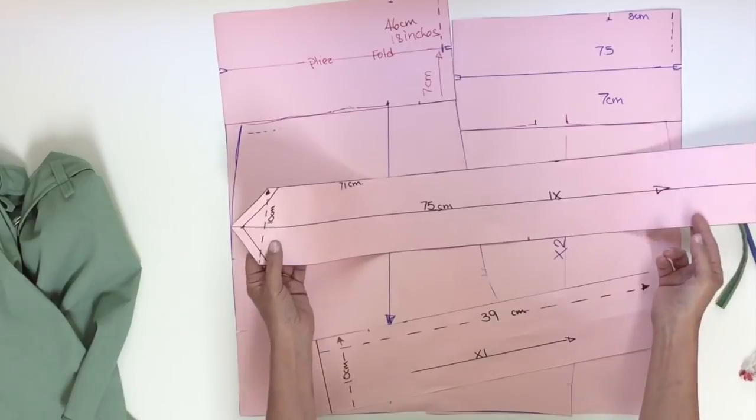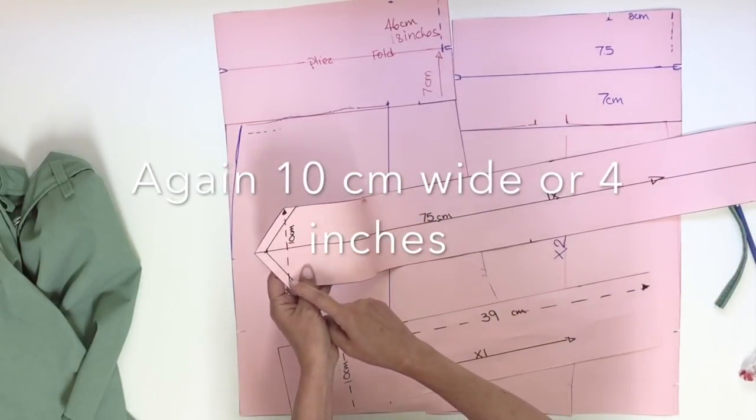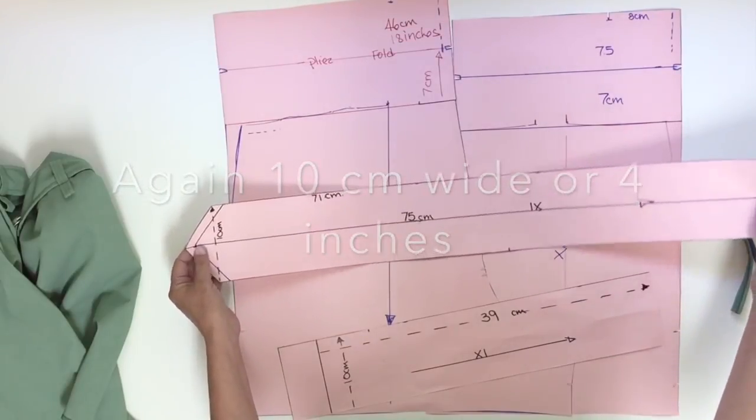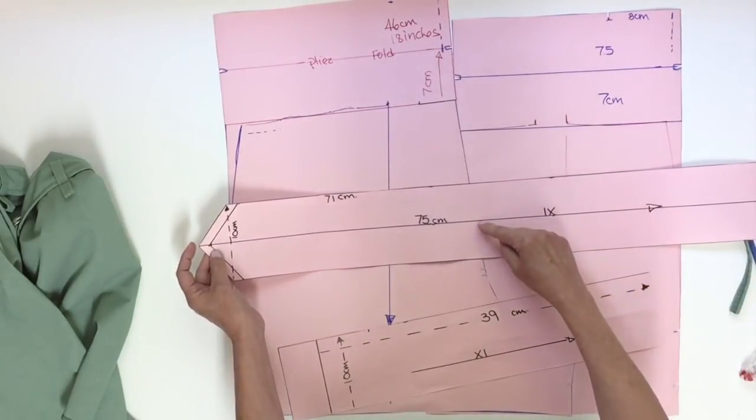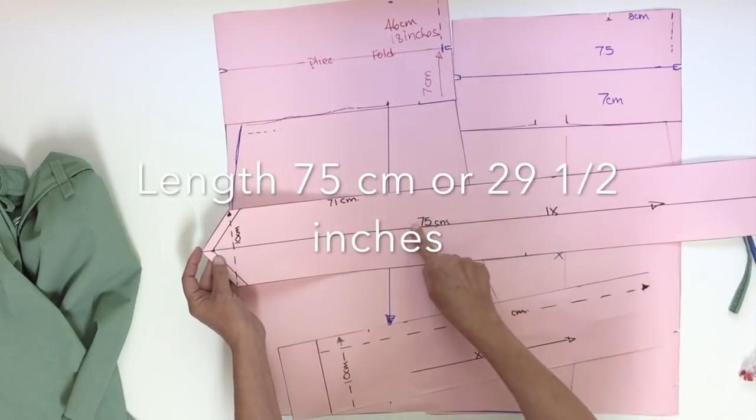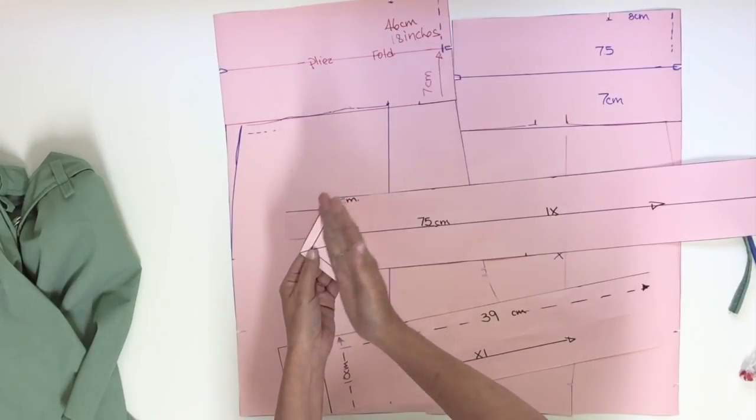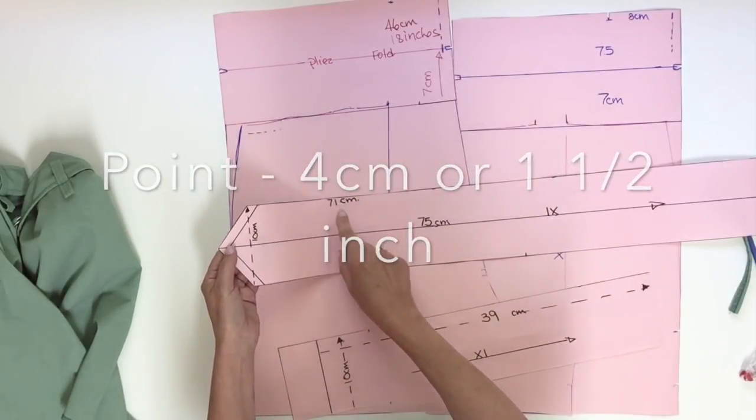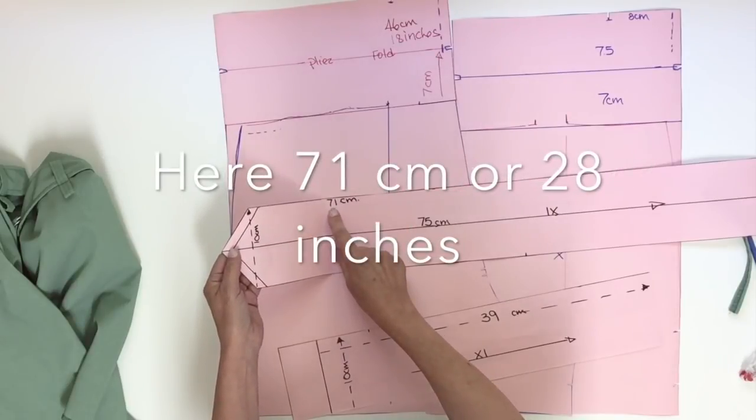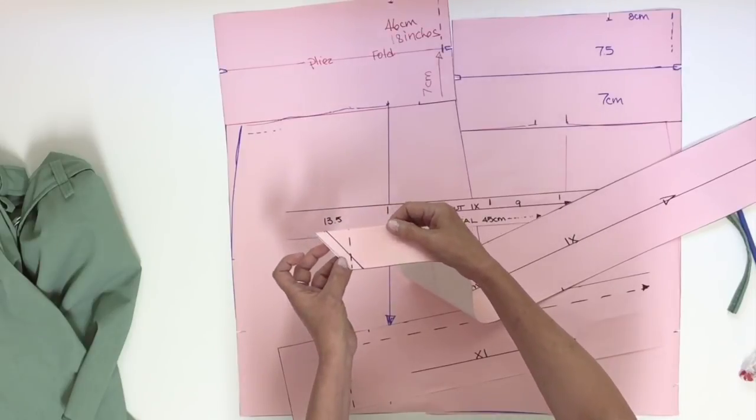Now the second piece, the longest one with a point, is going to be also 10 centimeters wide. But this time, you have a measurement for the center line. So at five centimeters, I measure 75 centimeters. And to create the point, I came back in four centimeters, so the outside line will be 71 centimeters. And once it's sewn, you get your point.